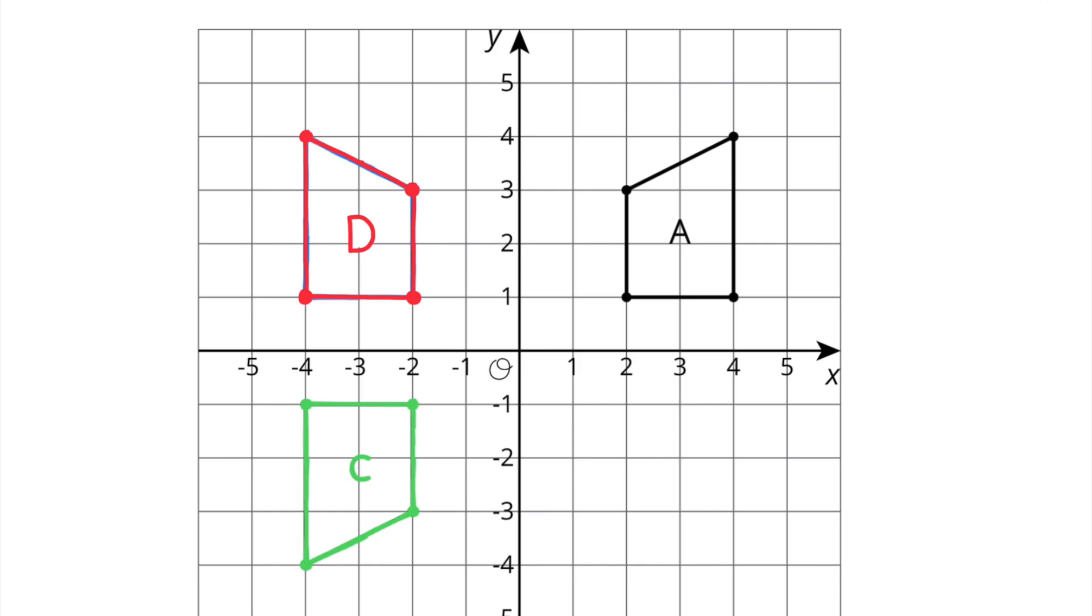Here you can see I've drawn polygon D in red. It's the exact same shape as polygon B.